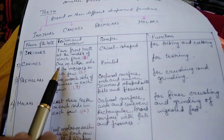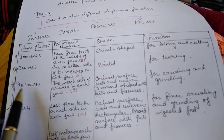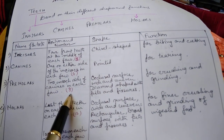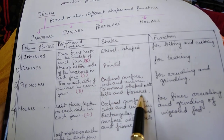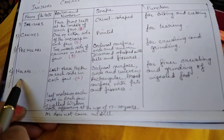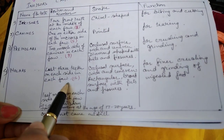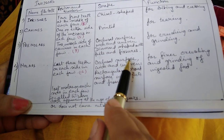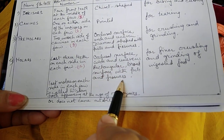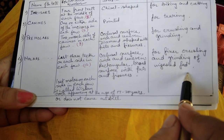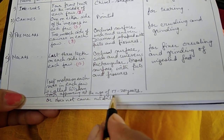Canines are present on either side of the incisors in each jaw; they are four in number, pointed, and used for tearing. Premolars are two on each side of the canines in each jaw, eight in number; they have a wide, uneven occlusal surface with pits and fissures and are used for crushing and grinding. Molars are the last three teeth on each side of each jaw, twelve in number; they have a wide rectangular occlusal surface with pits and fissures and are used for finer crushing and grinding. The last molar on each side of each jaw is called the wisdom tooth, appearing at age 17 to 20 years.